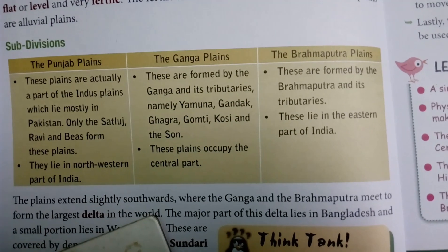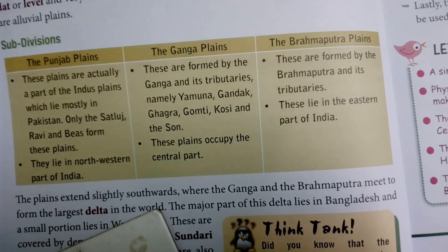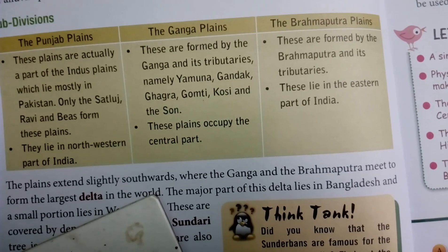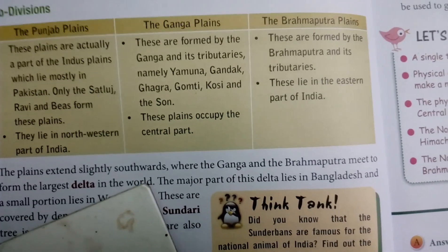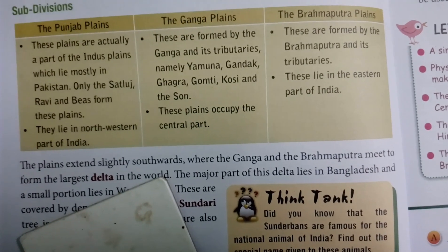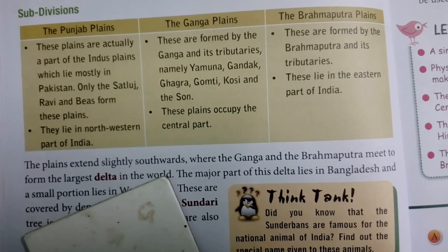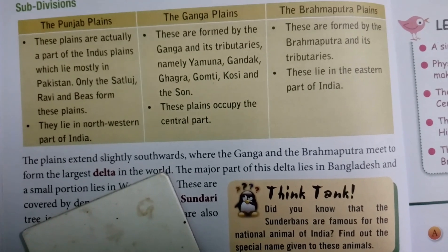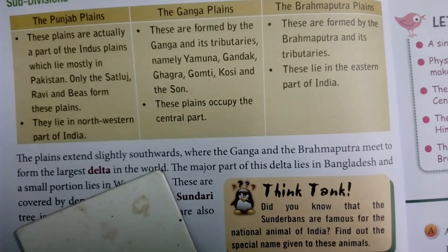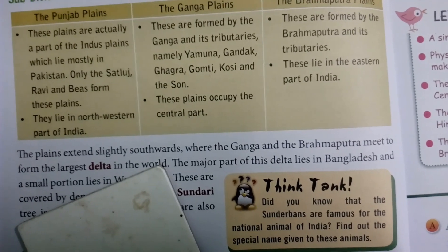The Ganga Plains are formed by the Ganga and its tributaries — namely Yamuna, Gandak, Gagra, Gomti, Kosi and Son. These plains occupy the central part of the alluvial plain.